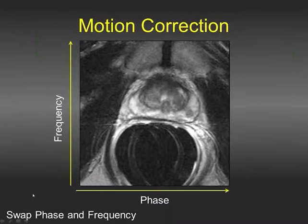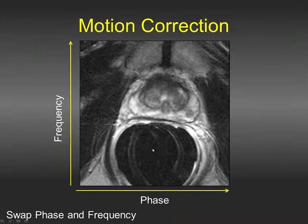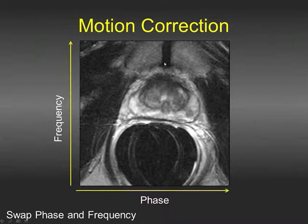Another useful technique: unlike routine pelvic imaging where phase is in the anterior-posterior direction and frequency is right-to-left, for prostate MR we swap so that phase is in the right-to-left direction. This matters because the endorectal coil can wobble slightly due to rectal peristalsis or inherent coil motion, and that motion gets propagated in the phase direction. By placing phase in the right-to-left direction, we prevent that motion from degrading image quality, as it would if propagated in the anterior-posterior direction.